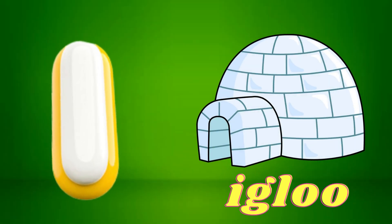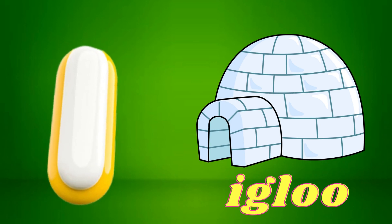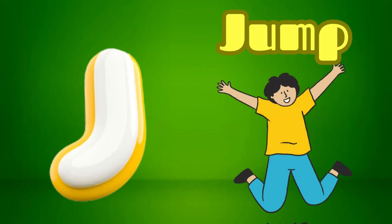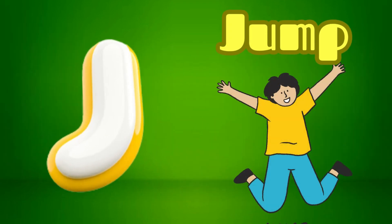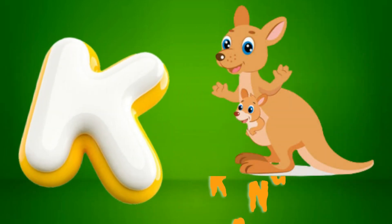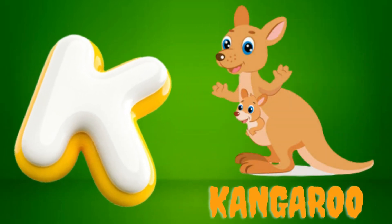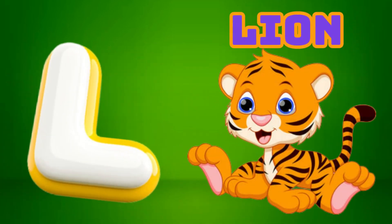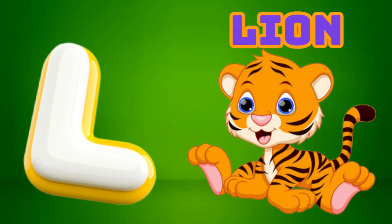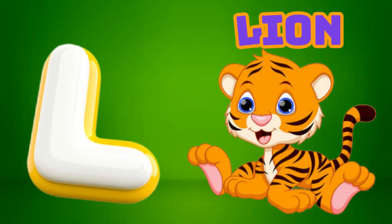I is for Igloo, I-I-Igloo. J is for Jump, J-J-Jump. K is for Kangaroo, K-K-Kangaroo. L is for Lion, L-L-Lion.